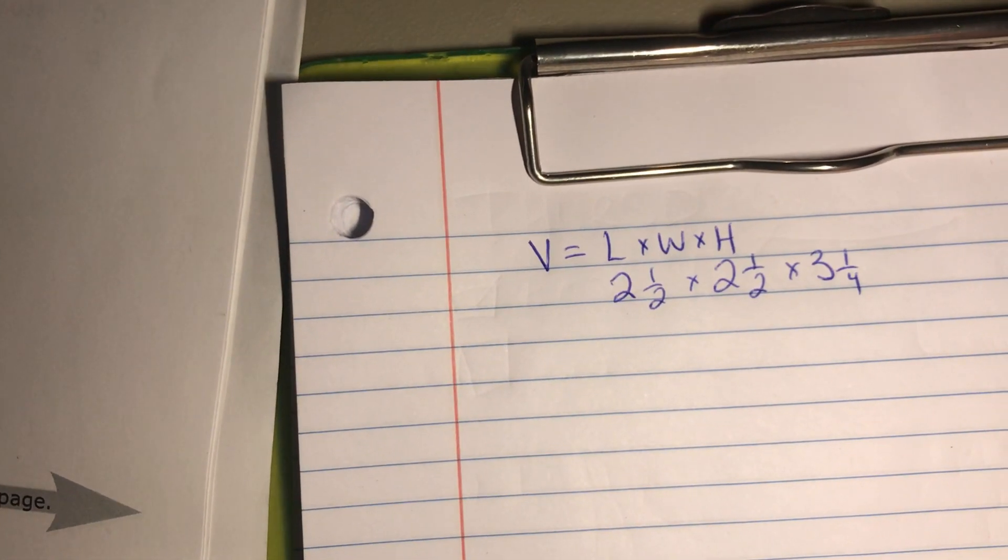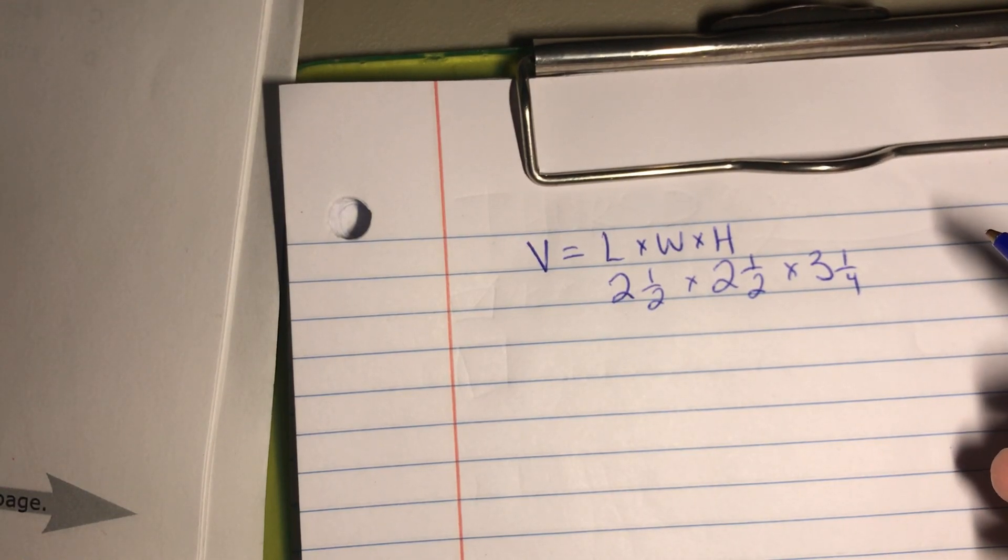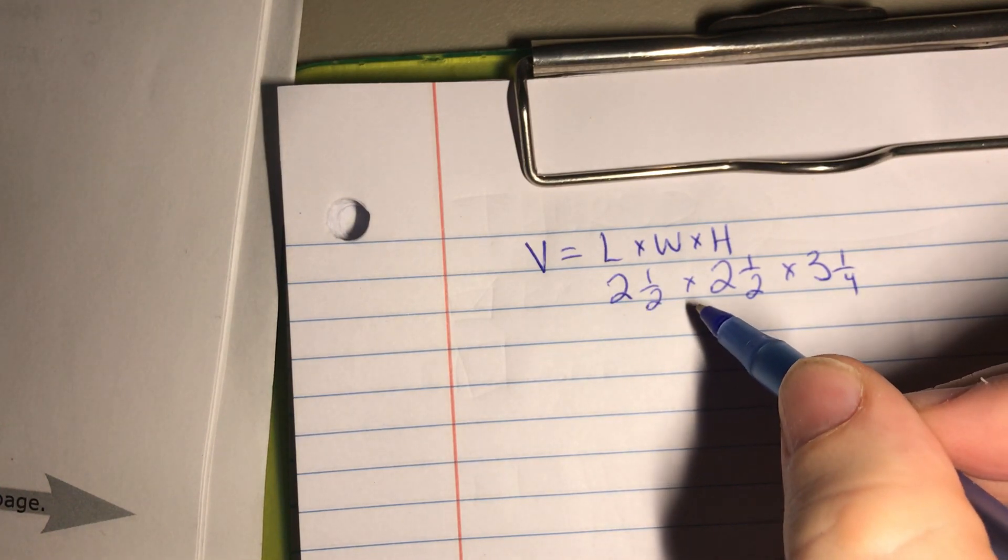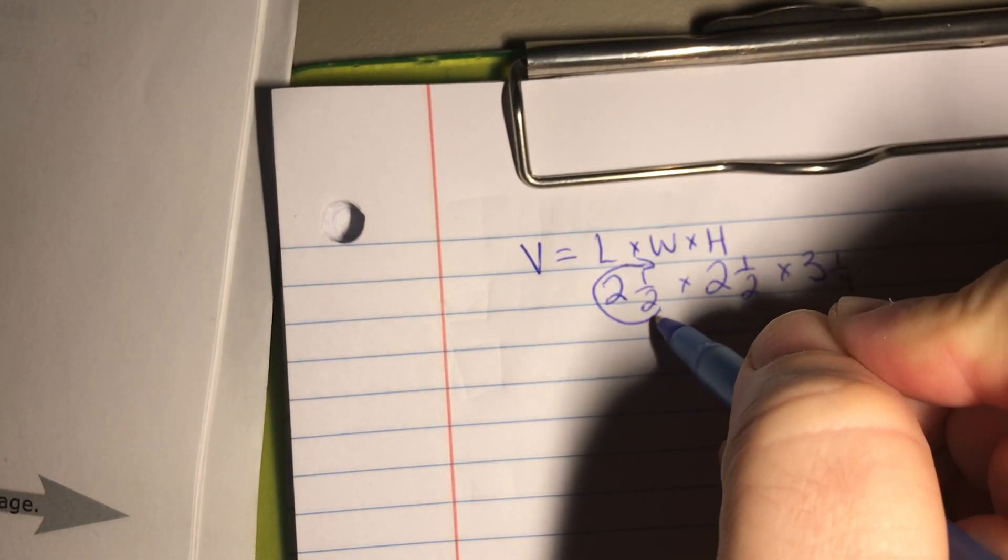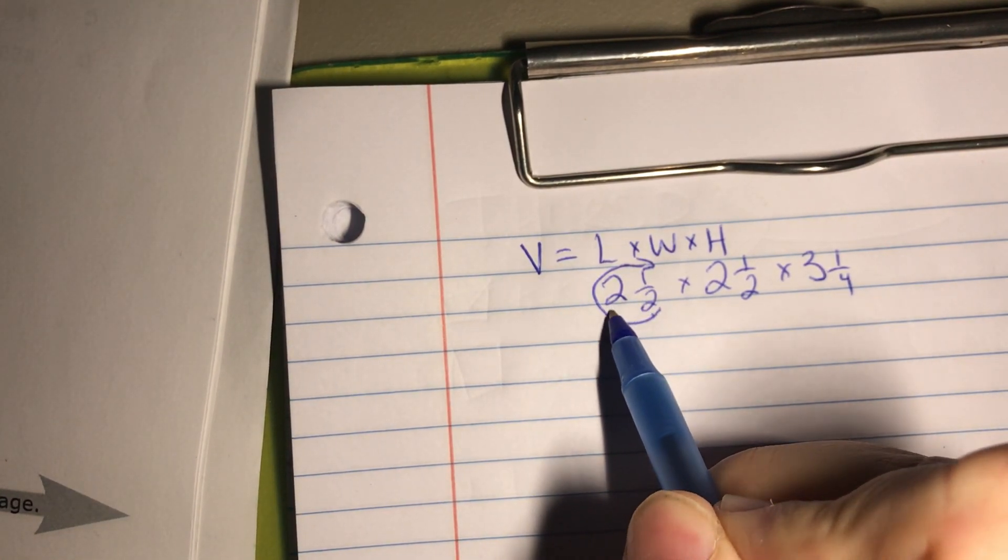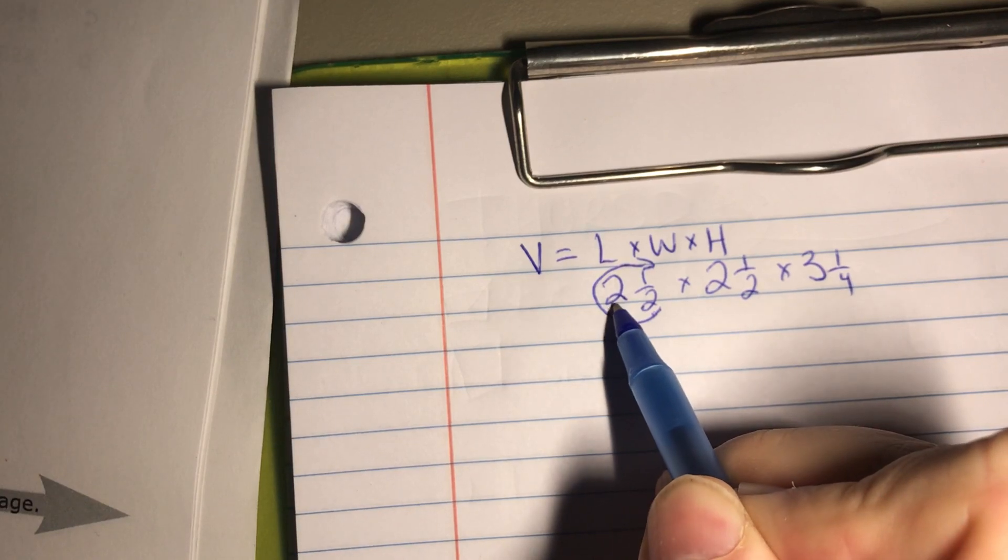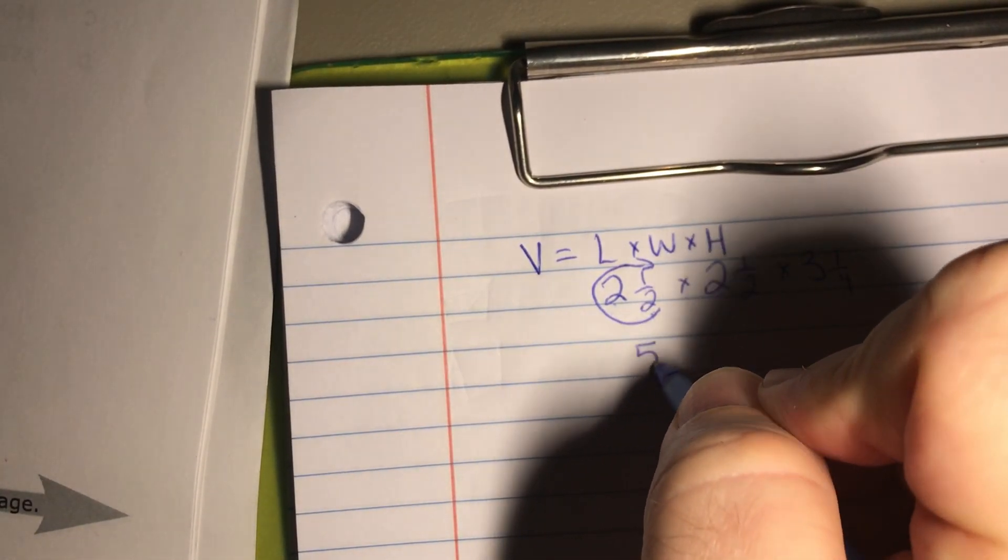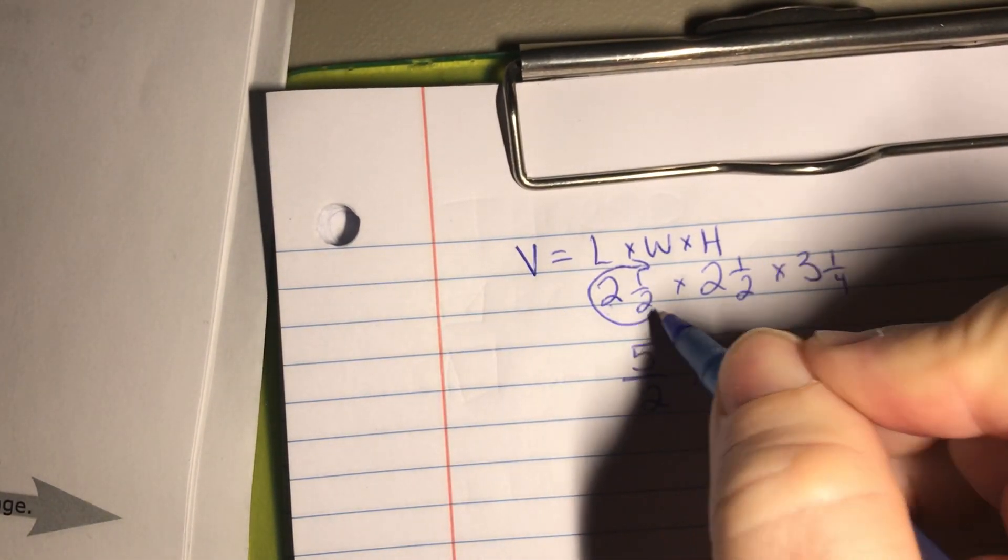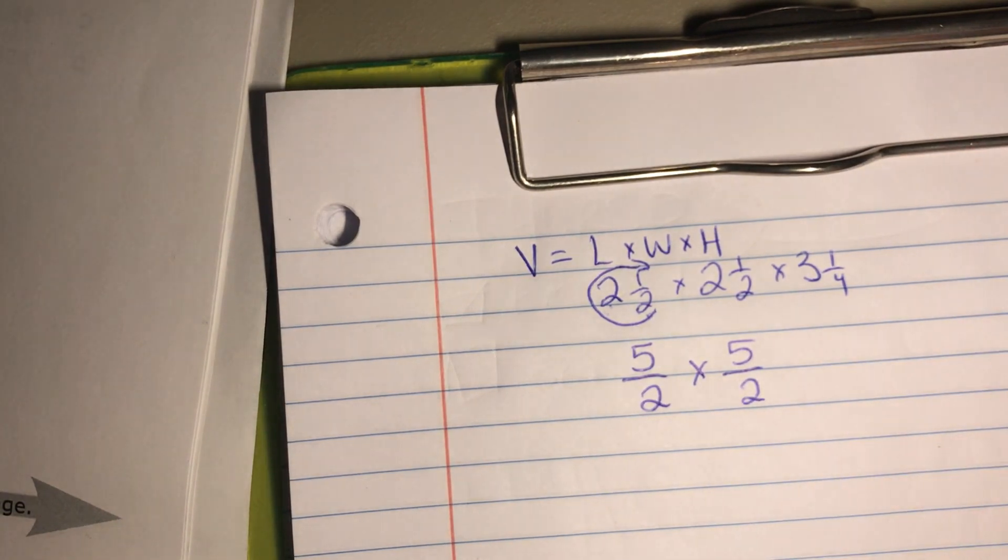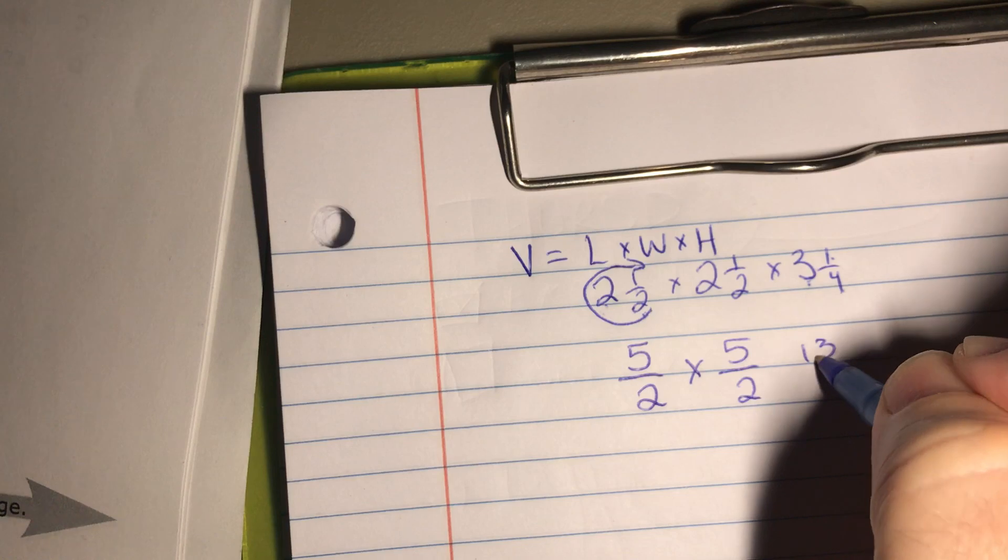Now before we can multiply these mixed numbers, we need to make sure we change them into improper fractions. Remember, to change a mixed number into an improper fraction, you have to use the around the world method. Or simply multiply the denominator by the whole number and then add that to the numerator. So two times two is four. Four plus one is five. Well I just did this one so I'm going to just rewrite the answer again right here. Four times three is twelve and then I add twelve to one and we have thirteen.